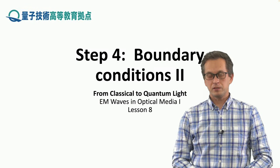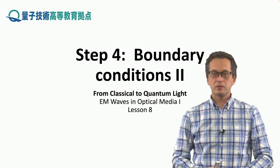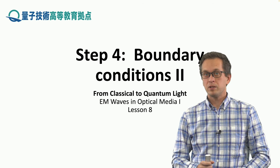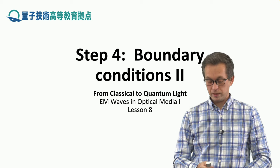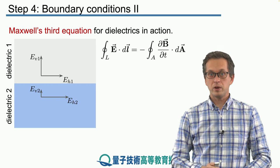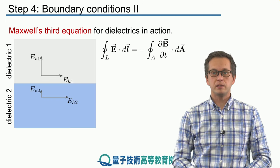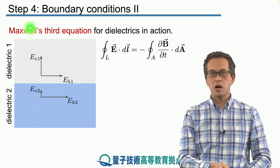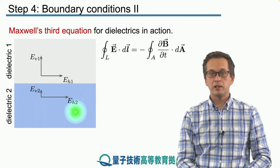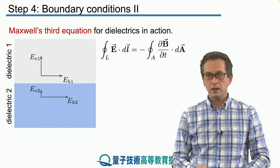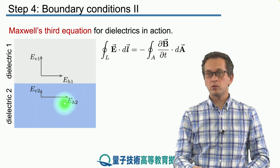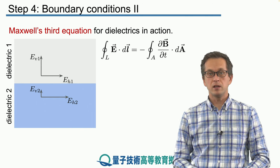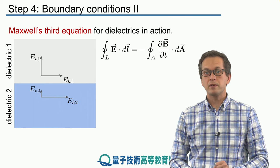Step 4, boundary conditions 2. Now we're going to continue with the derivation of boundary conditions, and in particular we are going to look at Maxwell's third equation. Here it is. The scenario is still the same. We've got our electromagnetic radiation coming from dielectric 1 and travelling into dielectric 2. But this time we're going to see what happens if we demand that the following condition is satisfied, when Maxwell's third equation holds.